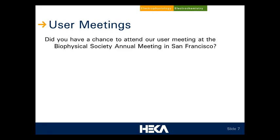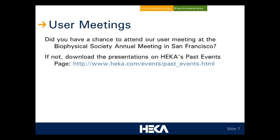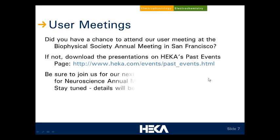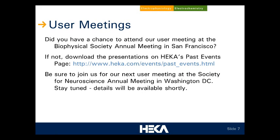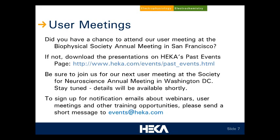Hecker likes to do a few user meetings, typically at the Biophysical Society meeting and the Society for Neuroscience meeting. Our last meeting was at the Biophysical Society meeting in San Francisco — this webinar is basically a repeat with some minor adjustments from that meeting. Those presentations and past events are available on our website. Be sure to join us at our next meeting at the Society for Neuroscience meeting in Washington, D.C. Please sign up for notification emails by sending a short message to events@hecker.com.